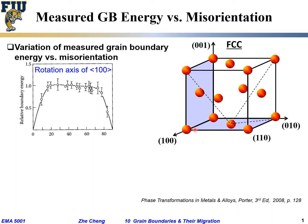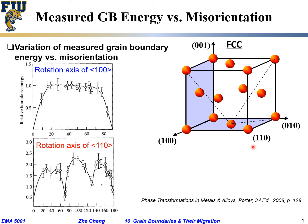Now let's look at the case where we rotate along a different axis — the [110] direction. We plot relative grain boundary energy versus misorientation angle from zero all the way to 180 degrees, which represents rotation to the other center of symmetry.